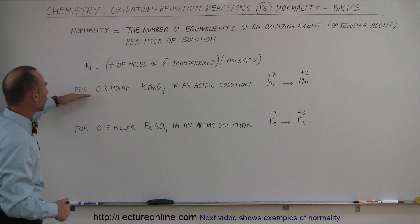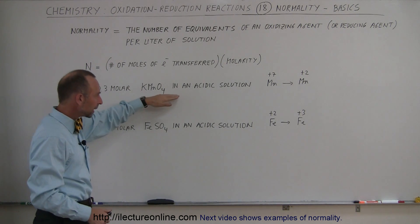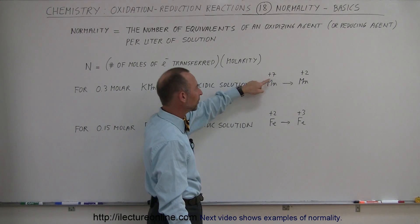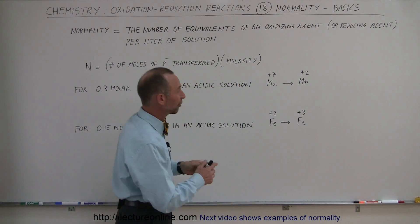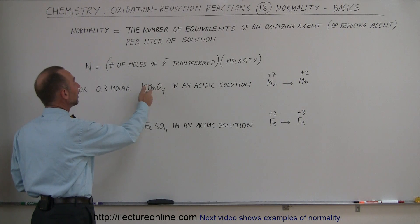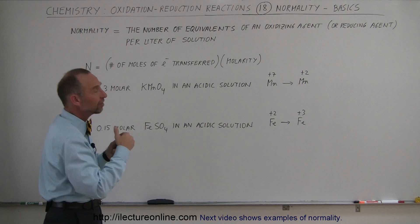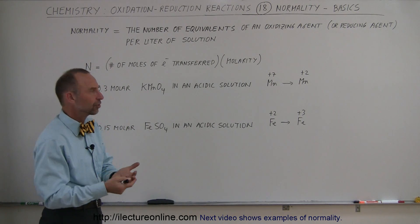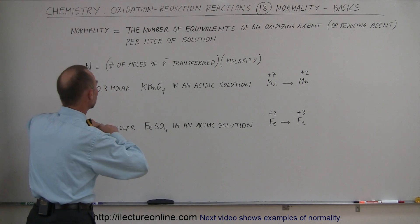So as an example, for 0.3 molar potassium permanganate in an acidic solution where the manganese ion goes from oxidation number plus seven to oxidation number plus two, that means for each mole of potassium permanganate, we have five moles of electrons being transferred. In this case, it's being accepted because it is what we call an oxidizer. It oxidizes by reducing. So what do we then do for the normality?